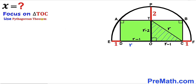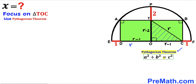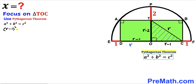Now let's focus on right triangle TOC and we are going to apply the Pythagorean theorem on this triangle to find out the value of radius r. The Pythagorean theorem is a² + b² = c². In our case, our hypotenuse is r whereas our two other legs are r minus 1 and r minus 2, so we get (r − 1)² + (r − 2)² = r².